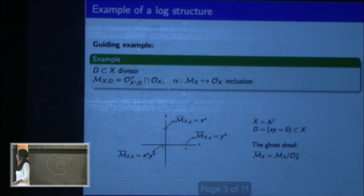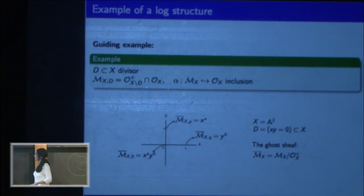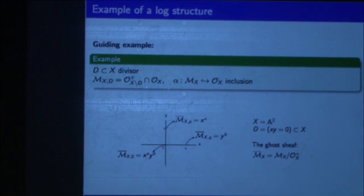Let me start by telling you what a log structure is. So if you have a divisor that you want to construct, I'll just give an example of a basic log structure, not the general definition. Take a sheaf of monoids on your scheme X and you want to add it to the data of a map to your structure sheaf so that this map will restrict to an isomorphism once you look at the invertible elements of your structure sheaf.